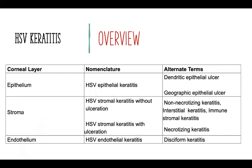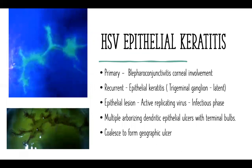Coming to HSV keratitis, we'll deal with it layer by layer. First is HSV epithelial keratitis in dendritic or geographic form. Next is stromal keratitis, which can be with ulceration — called necrotizing — or without ulceration — called non-necrotizing. The endothelial part is called endothelial keratitis, the most common manifestation being disciform keratitis.